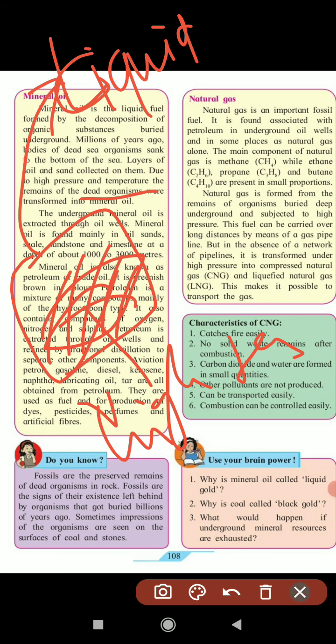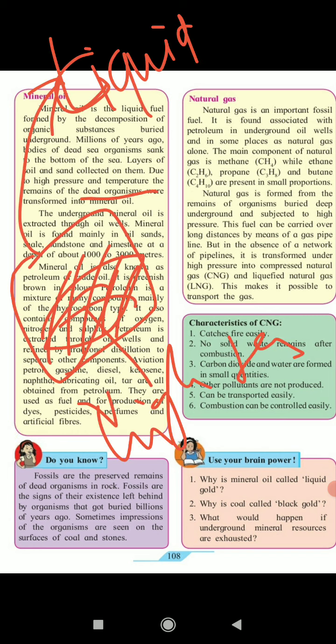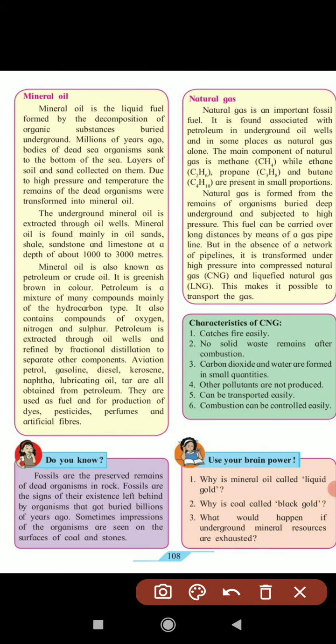This underground mineral oil is extracted through oil wells. Mineral oil is found mainly in oil sand, shale, sandstone, and limestone at depths of thousands to three thousand meters. This mineral oil is known as petroleum or crude oil.